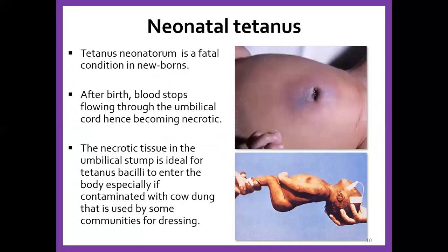In neonatal tetanus, which is normally a fatal condition, after birth blood stops flowing to the umbilical cord, so the cord area becomes necrotic. This provides a very good environment for tetanus. This will happen if people are cutting the cord with things that are not sterilized. One of the reasons that neonatal tetanus cases have declined is because of increased hospital-assisted deliveries, rather than traditional birth attendants at home who don't have sterilized equipment.